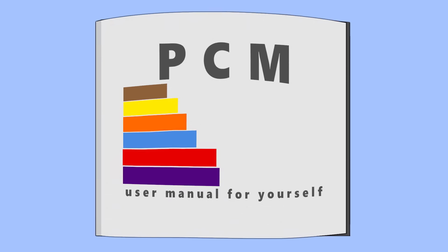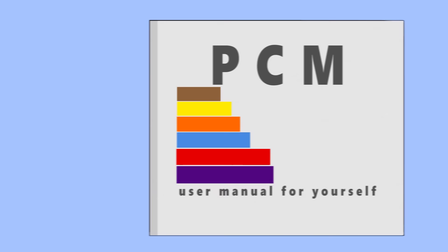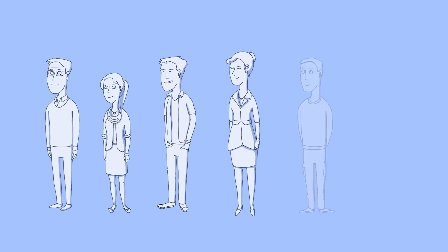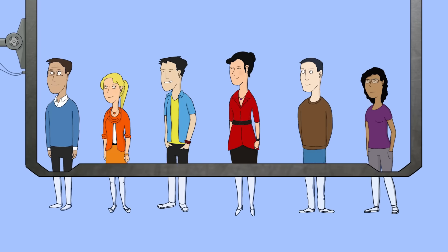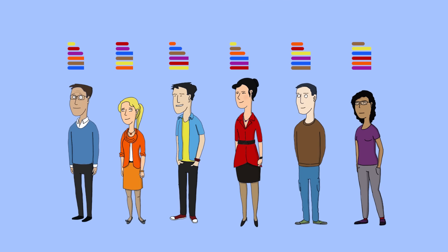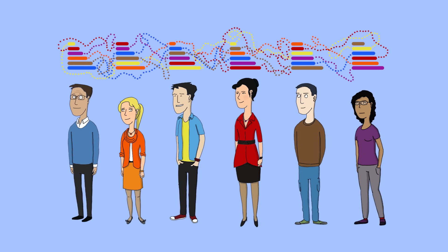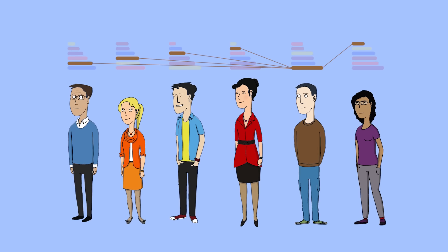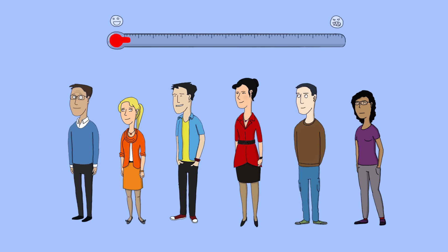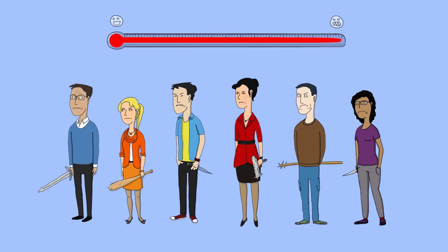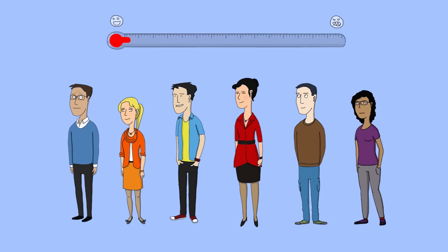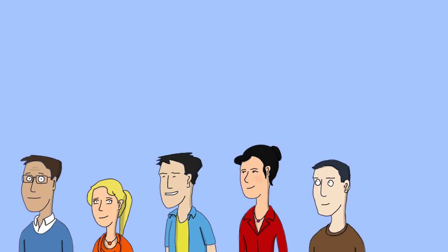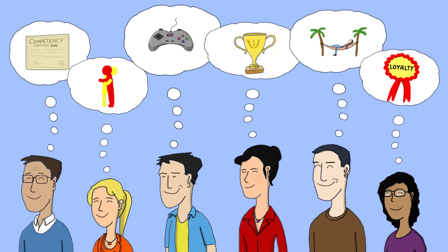PCM is like the user manual we never got for our own personalities, and when applied to groups, the model acts like an x-ray system for a team's collective behavioural DNA. The Process Communication Model will help you dramatically improve communication, reduce conflicts, and motivate individuals and teams through a simple yet in-depth understanding of the human personality.